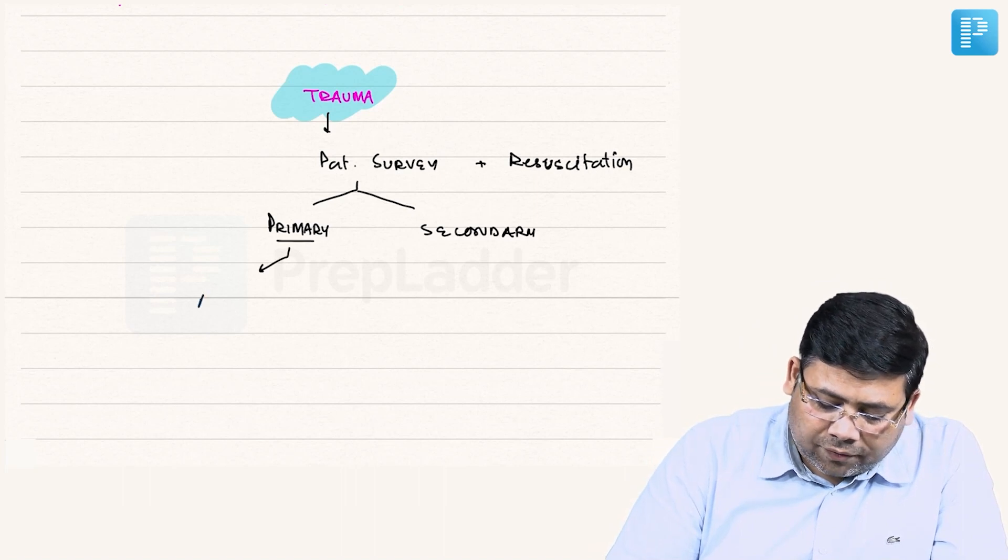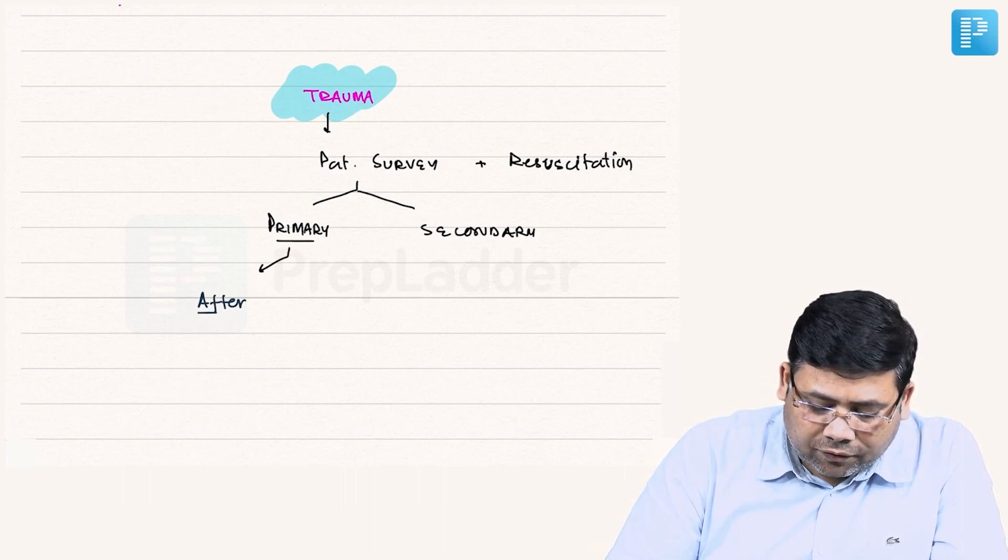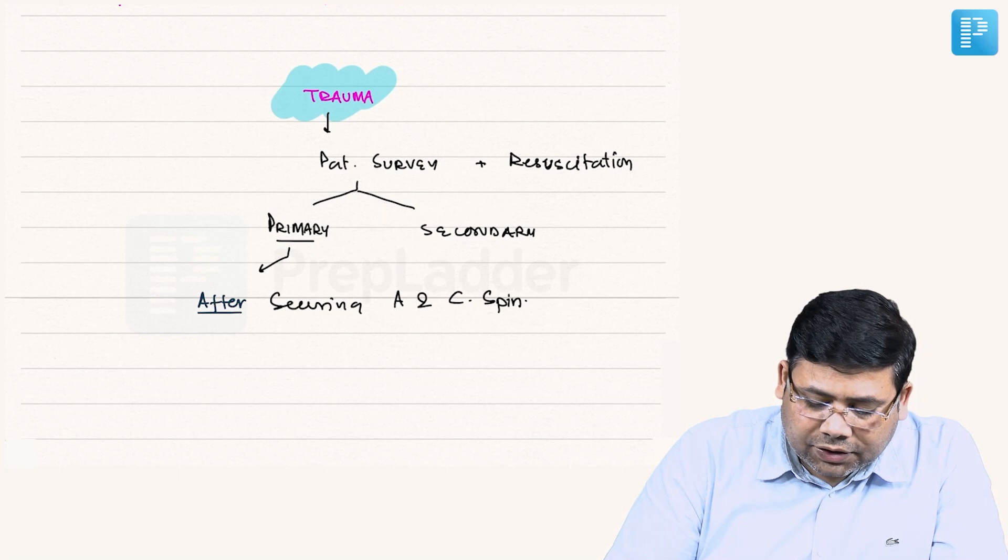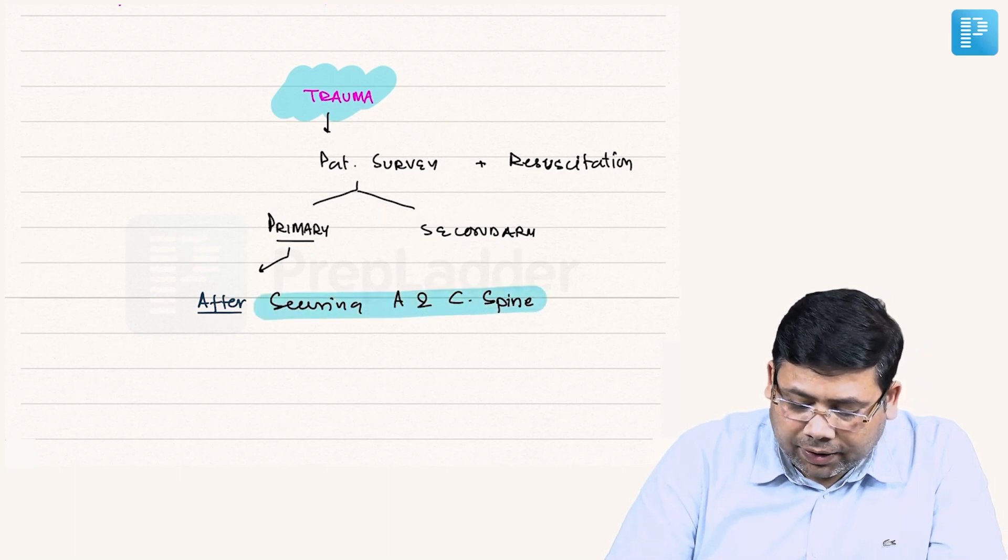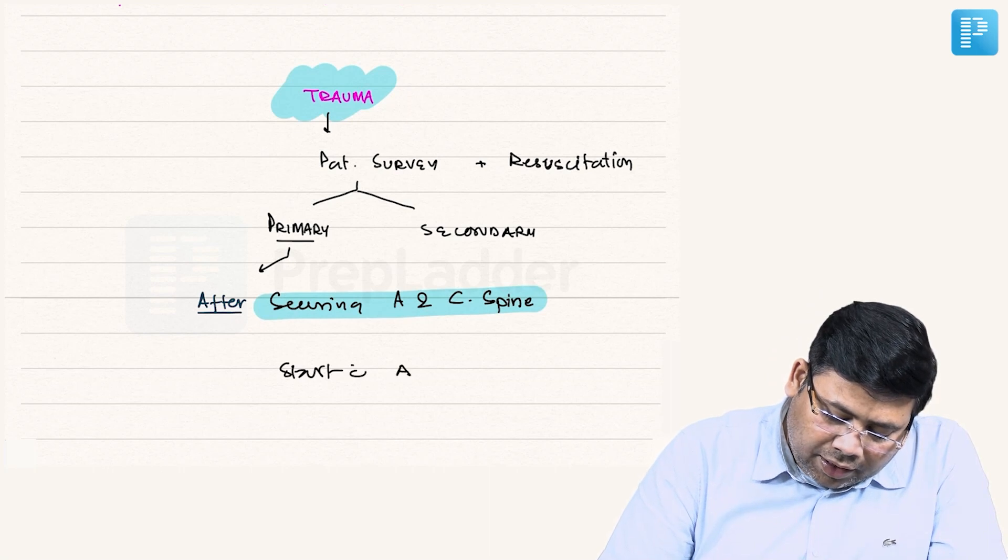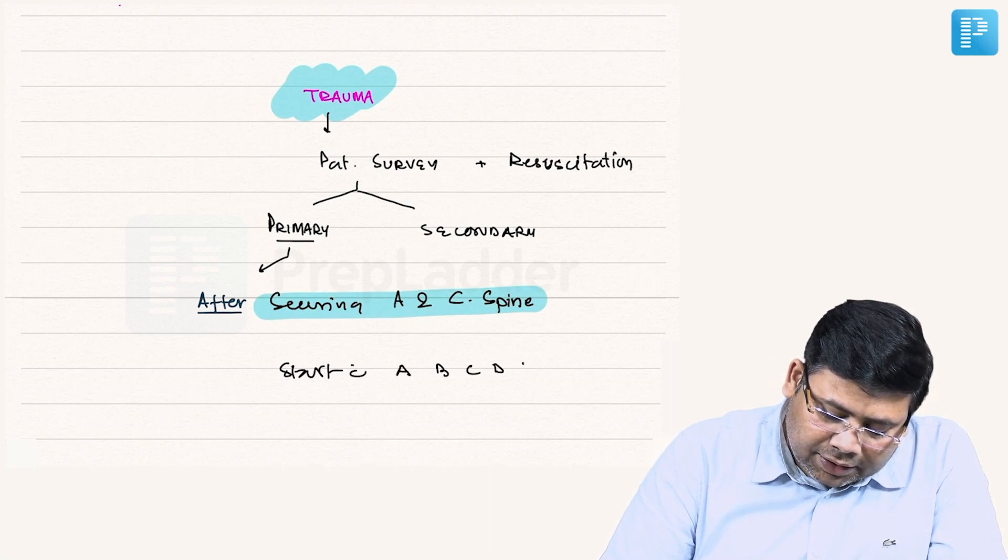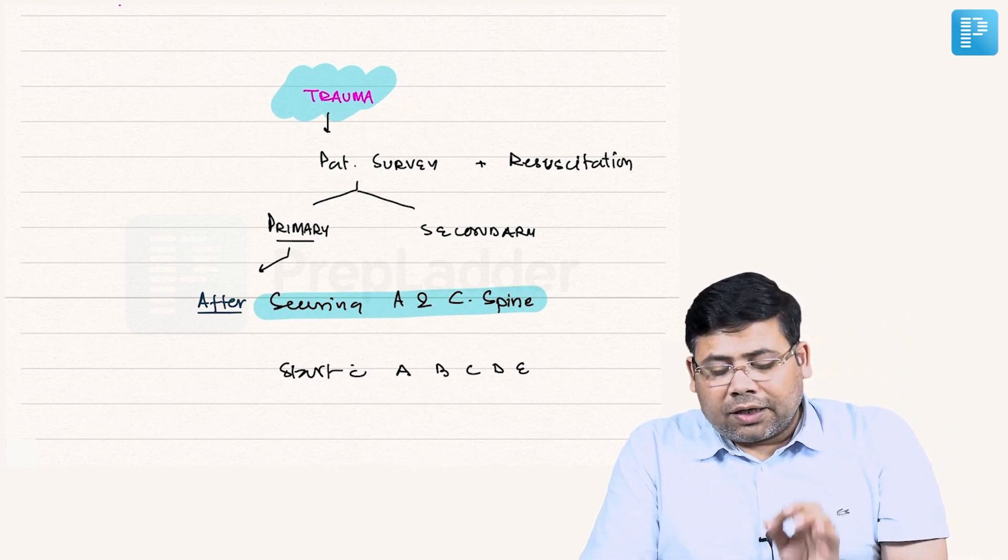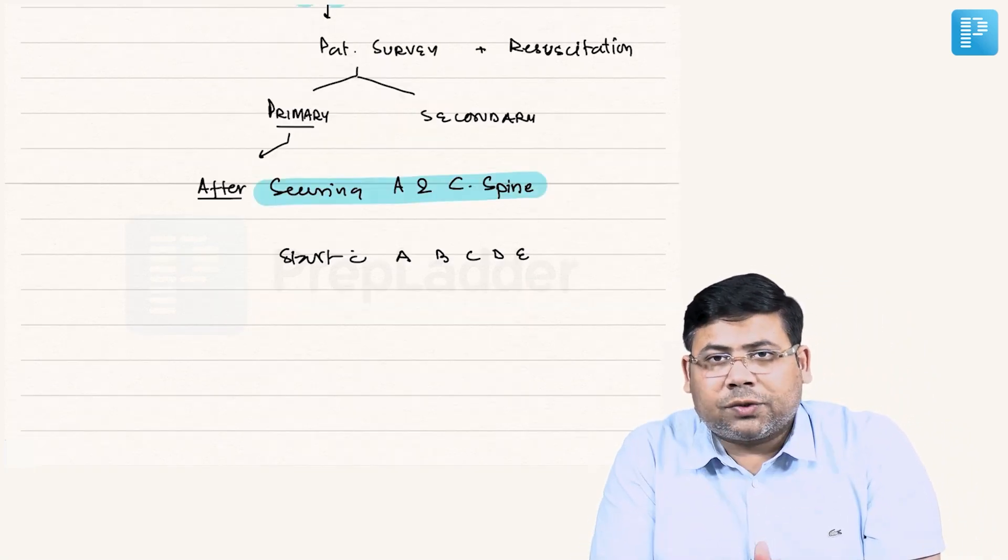According to this concept, we follow the concept of—after securing airway and cervical spine—we start with A, B, C, D, E. So this is assessment of airway, breathing, circulation, disability, and exposure.